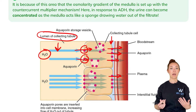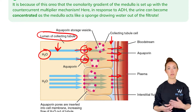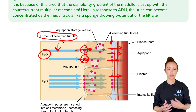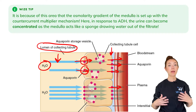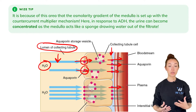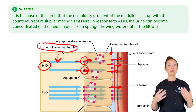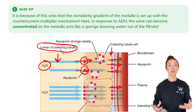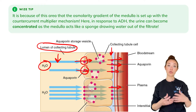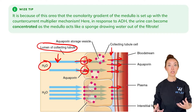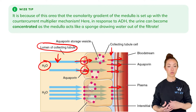The water can then be reabsorbed directly back into circulation where we need it, so that it doesn't get thrown away in urine if we actually need that water to maintain normal blood volume and blood pressure. When we talked about the countercurrent multiplier and why it was required to set up an osmolarity gradient in the medulla, it was because of the collecting ducts — we need a concentration gradient of water to draw water from the filtrate into the interstitium, which then goes into the circulation.